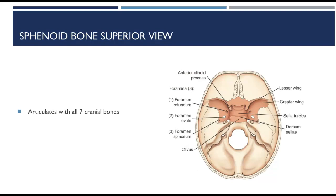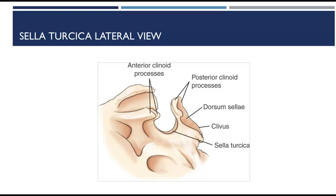The sphenoid bone articulates with all seven cranial bones. It is a bat-like bone with wings. The sella turcica is the central depression of the body — it looks like a saddle from the side and is derived from the term 'Turkish saddle.' The sella turcica surrounds and protects the pituitary gland.